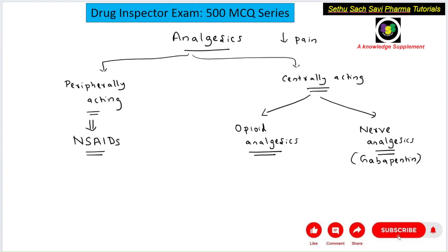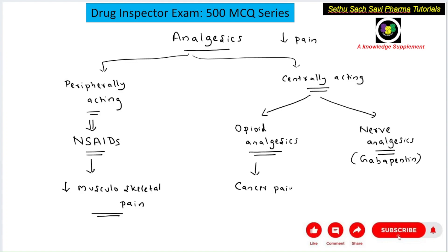Gabapentin, amitriptyline, and nortriptyline are drugs given to reduce neuropathic pain. NSAIDs, the non-steroidal anti-inflammatory drugs, are peripherally acting analgesics mainly given to reduce musculoskeletal pain. You don't want opioid or narcotic analgesics like morphine for musculoskeletal pain — opioids like morphine are required for cancer pain, severe visceral pain, and organ-related pains, where a strong analgesic is needed.